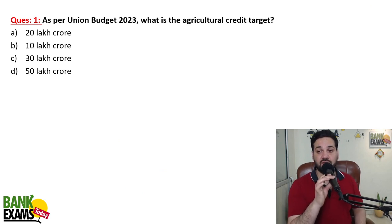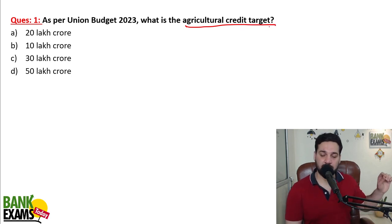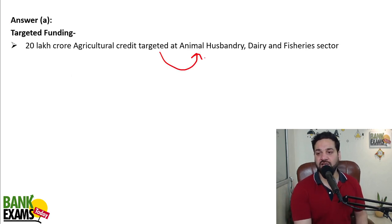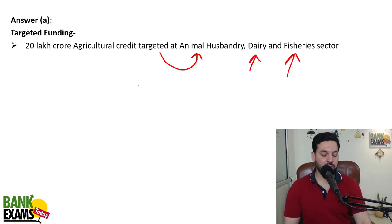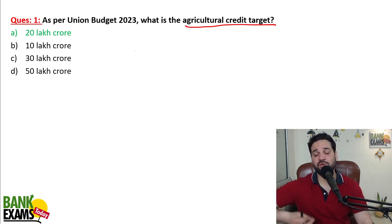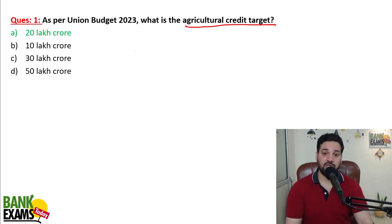As per Union Budget, what is the agricultural credit target? The agricultural credit target is 20 lakh crore, which is specifically targeted at animal husbandry, dairy, and fishery sectors. While doing the questions, also focus on the explanations — there is extra information in explanations which is also highly relevant. So 20 lakh crore.